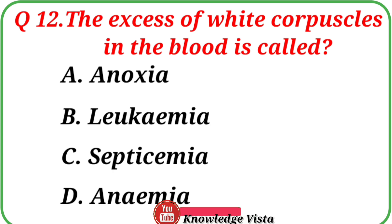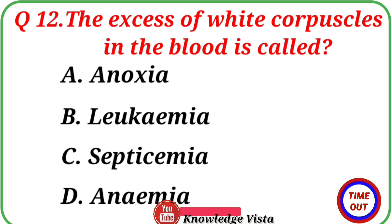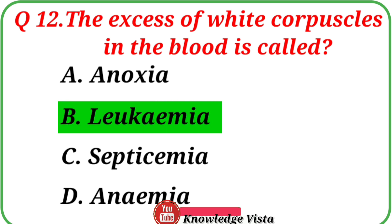Question number 12: The excess of white corpuscles in the blood is called — Option A: Anoxia. Option B: Leukemia. Option C: Septicemia. Option D: Anemia. The correct answer is option B, Leukemia. If there is an elevation in the level of lymphocytes, the condition is known as lymphocytic leukocytosis. This may occur as a result of a virus or infection such as tuberculosis, and may also be linked to specific lymphomas and types of leukemia.